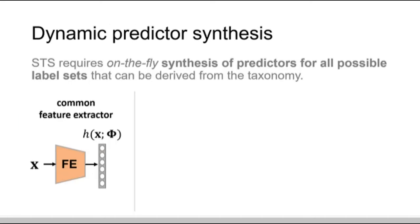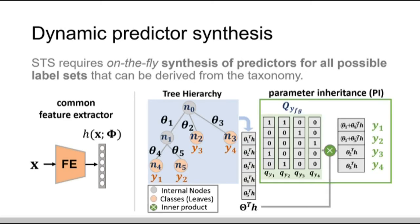To implement stochastic tree sampling, we propose a dynamic predictor synthesis procedure. It contains a common feature extractor shared by all predictors for sharing knowledge.